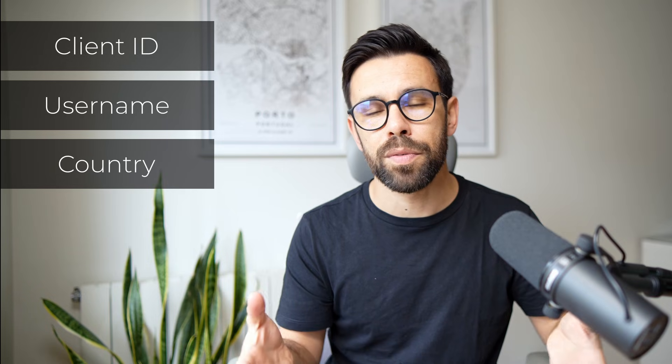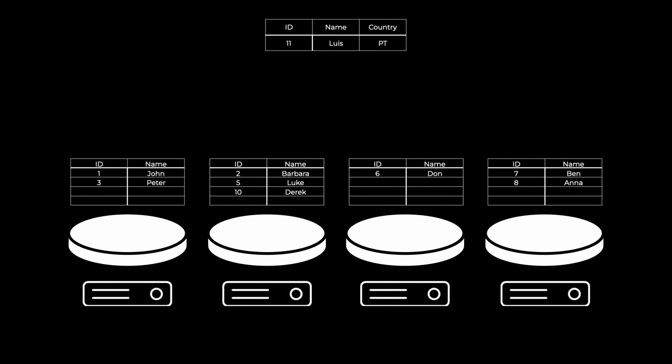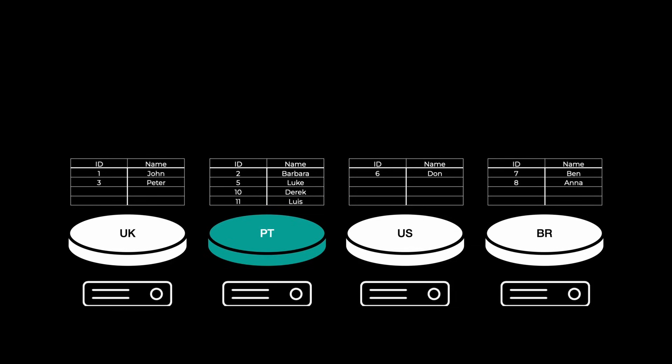The sharding key can be a property of your data — something like a client ID, a username, a country, or several different things. Basically, it's some data we look at to decide where it should go. And when we need to find it, we know where to look. If the book category is the sharding key, you know which shard to go to for science fiction. On top of the shards, we need software to route decisions — where to look for data, where to write it.